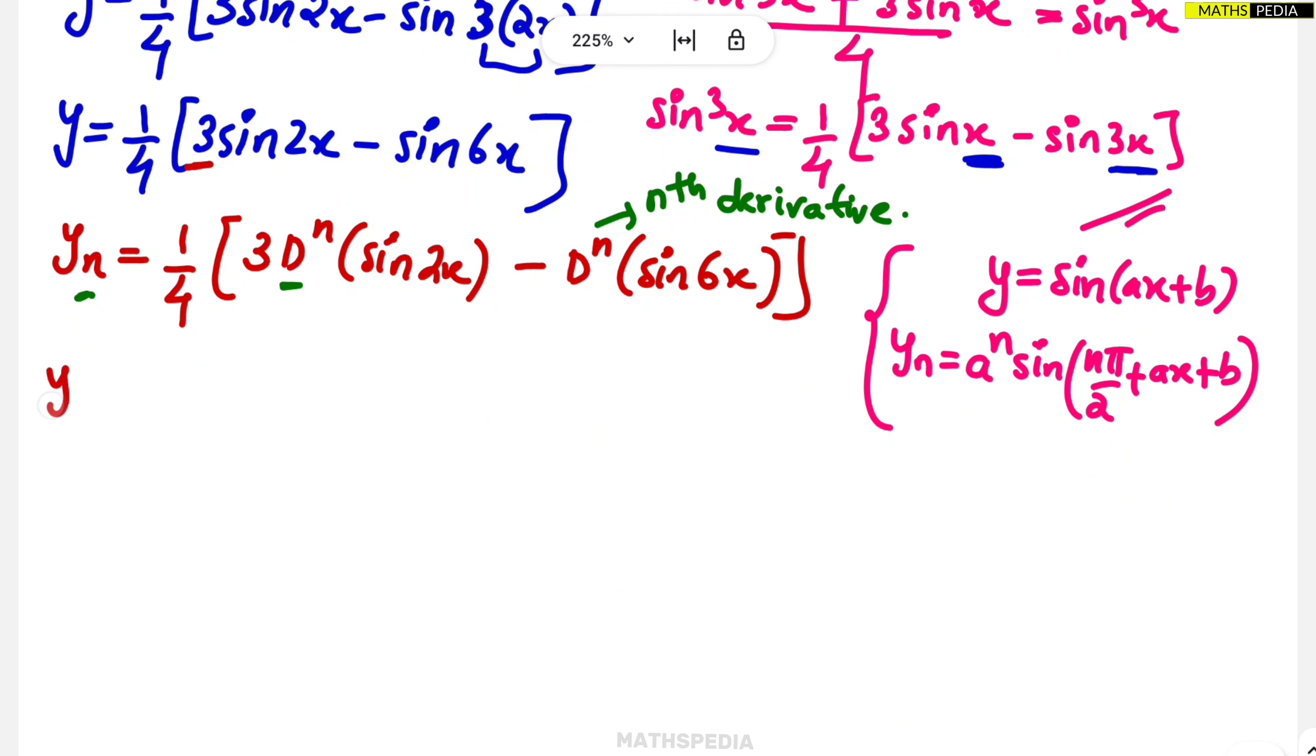So what will happen? yn is equal to 1 by 4 into 3 as it is. A power n. Now you will ask me where is b term? ax plus b is there. Here only ax is there, so b term you have to assume it as 0. Here a value is the coefficient of x.